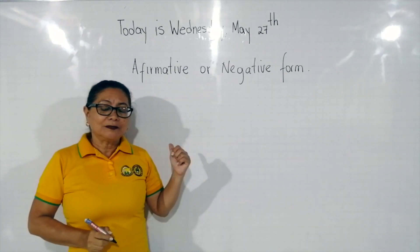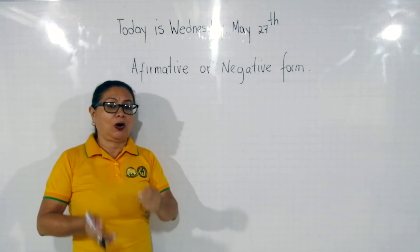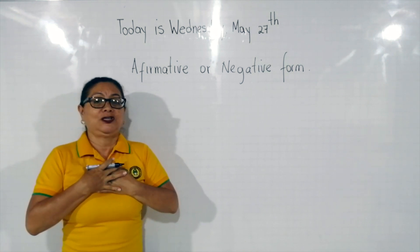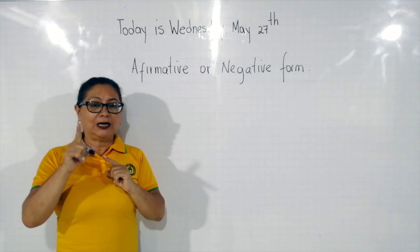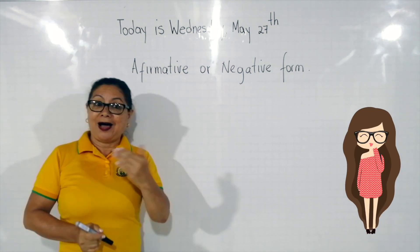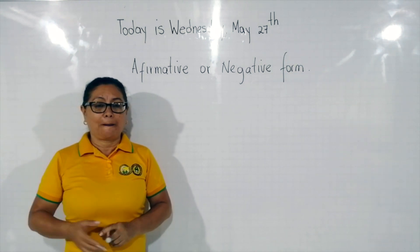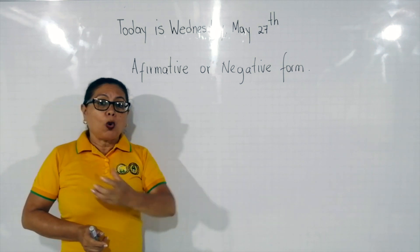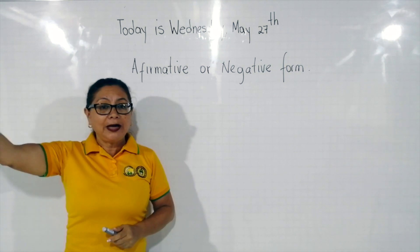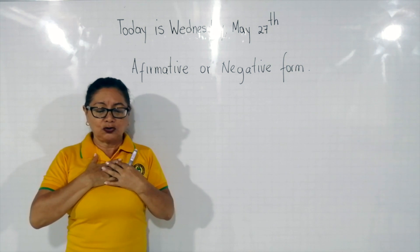Además, vamos a recordar diferentes personas. Por ejemplo, cuando yo digo 'I', me refiero a mí. Si yo digo 'you', me refiero a ti. Si yo digo 'she', me refiero a ella. Si yo digo 'he', me refiero a él. Si digo 'we', es porque estamos hablando de nosotros. Y si digo 'they', es porque estamos hablando de ellos o ellas, donde nosotros no vamos a estar.